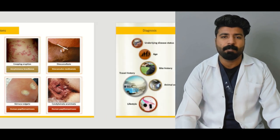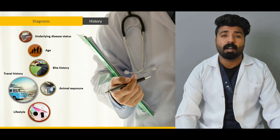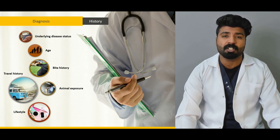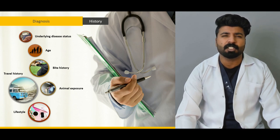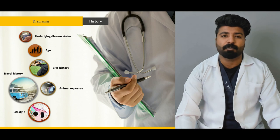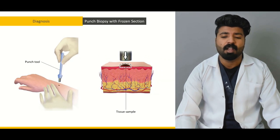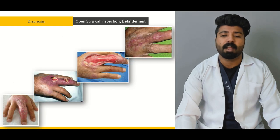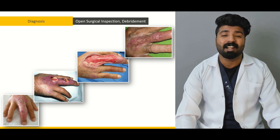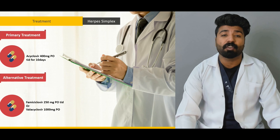Afterwards, we're going to talk about papular and nodular lesions and what organisms cause them. After covering all these different kinds of skin and soft tissue infections, we'll move to diagnosis — starting with history, discussing specific factors that help us reach a differential diagnosis. From there we'll go through diagnostic modalities: soft tissue radiography, punch biopsy, tissue sampling if required, and open surgical inspection and debridement, which may also help in reaching the diagnosis.